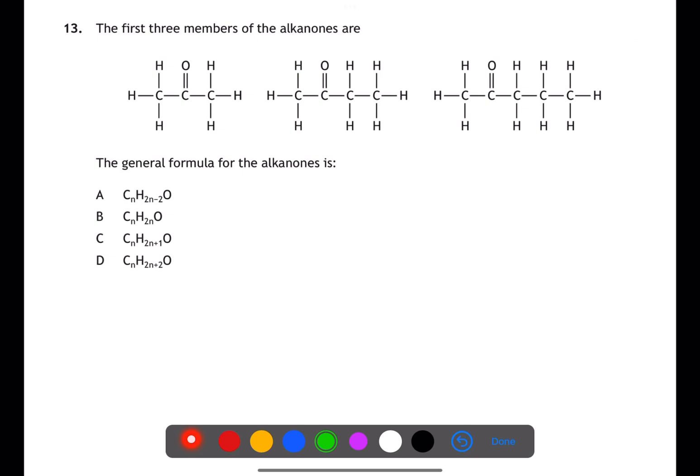When you're given a set of structures to work out a general formula, it's best to start by writing out the formula. Make sure you write this in the same format as the general formulas given in the answers. Here we can see that comparing the three compounds to the general formulas given, we have CnH2nO, which is B.